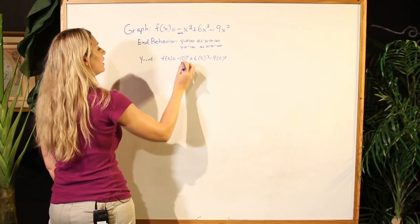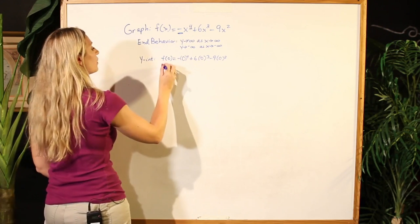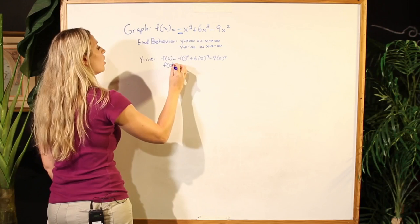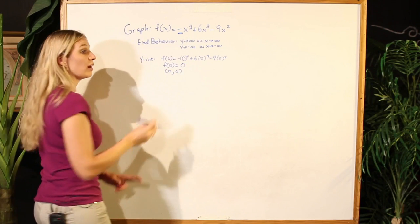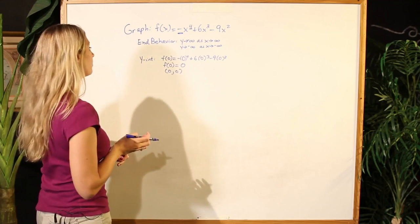In doing so, we will see that this particular graph will have a y-intercept at (0, 0). Thus, this graph will pass through the origin.